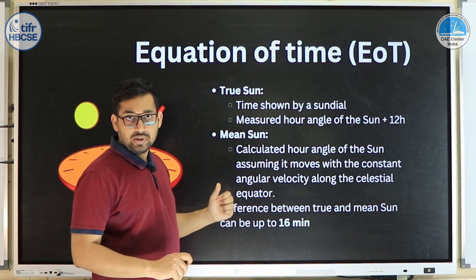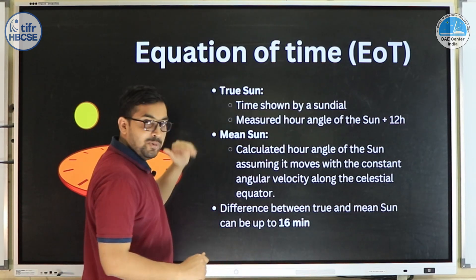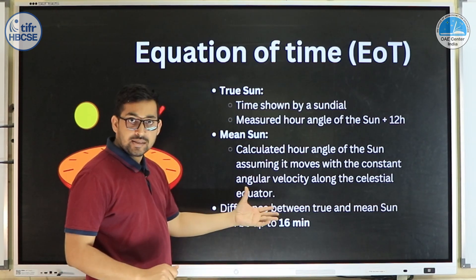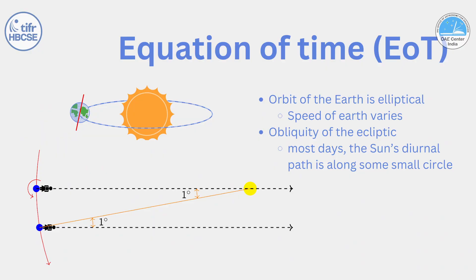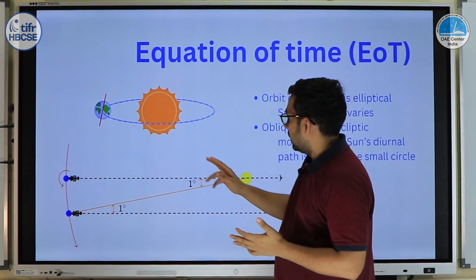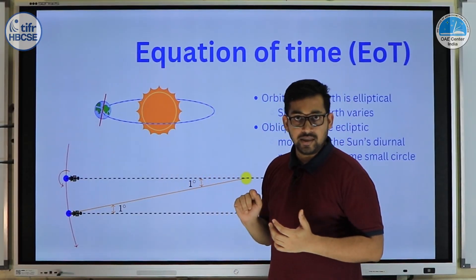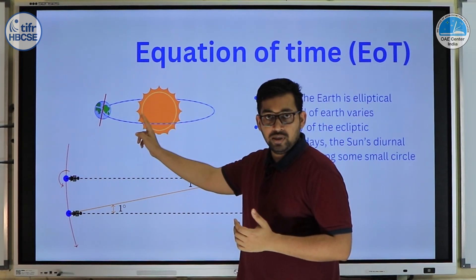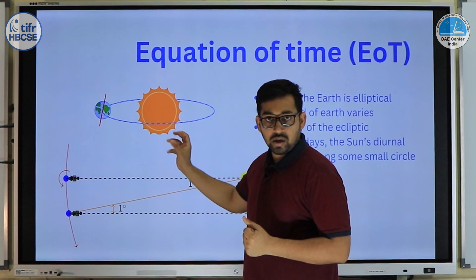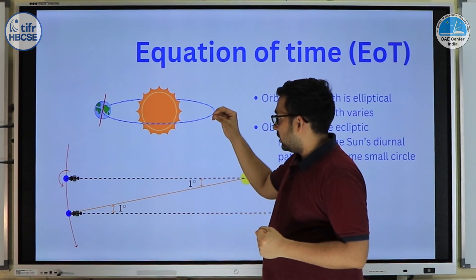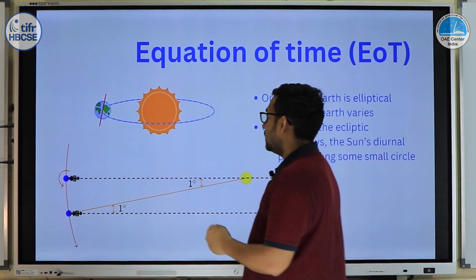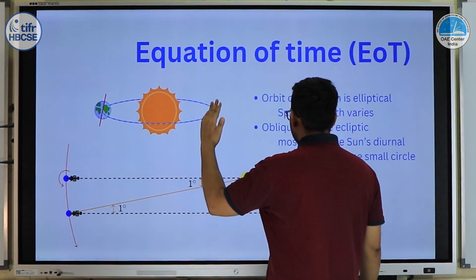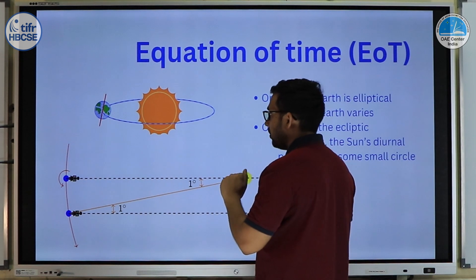If the Sun was actually moving uniformly across the celestial equator with uniform angular velocity, we would not see the analemma and there would be no concept of equation of time. But because there is a difference between these two — which can be as much as 16 minutes — we have to take this into account. Two major factors affect the equation of time: one is that Earth's orbit is elliptical, so Earth's speed along its orbit is not uniform; and another is the obliquity of the ecliptic.